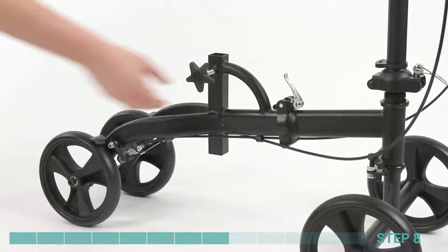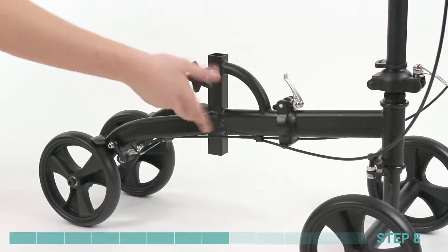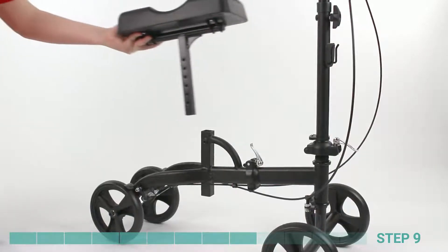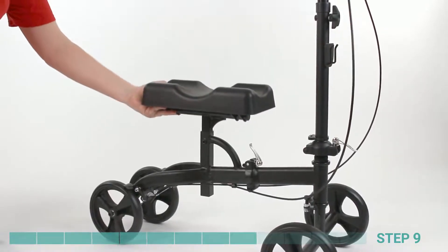Step 8. Unscrew and remove the adjustment knob from the hole at the top of the knee pad base. Step 9. Insert the knee pad pole into the knee pad base.